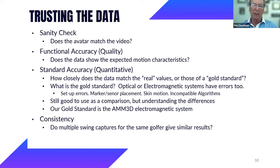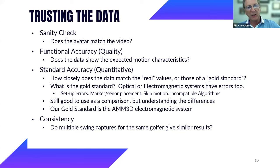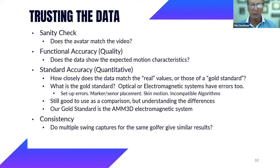Now let's talk about trusting the data. I look at several levels. The first is what I call a sanity check: does the avatar match the video? When you overlay the avatar on the video, do they move and match? Second is functional accuracy — does the data show the expected motion characteristics for a golf swing? For example, in chest turn, do we see the chest turning into the downswing before the top of backswing?